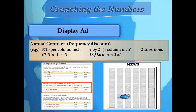For the annual frequency contract, you can advertise three to twelve times per year at $713 per column inch, or 13 or more times per year at $670 per column inch. If I choose the minimum of three insertions and run a two-by-two four column inch ad each time, that's $713 times four column inches times three insertions — with this annual contract we're looking at paying $8,556 to run three ads.